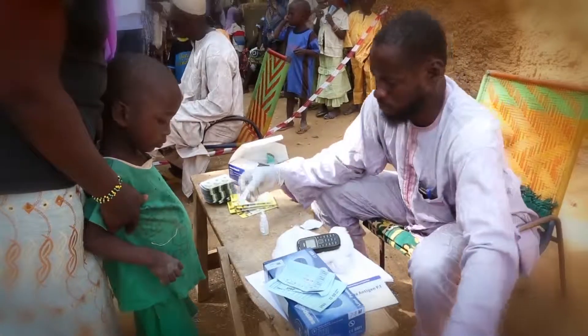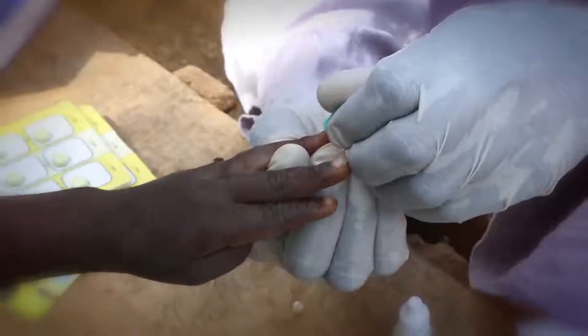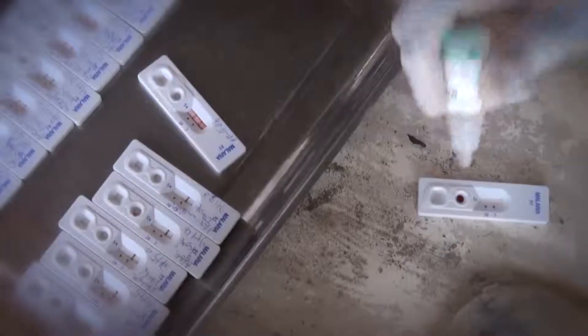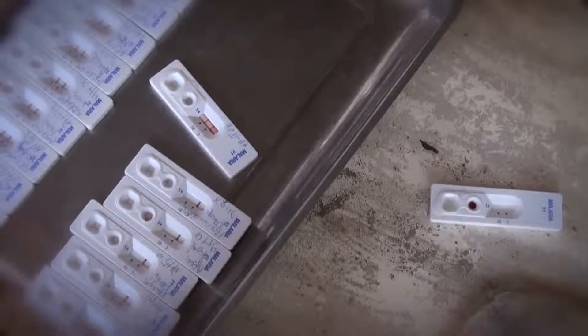To test for malaria, all you need to do is place a drop of blood from a finger prick on a test strip. With this rapid diagnostic test, doctors can act immediately.